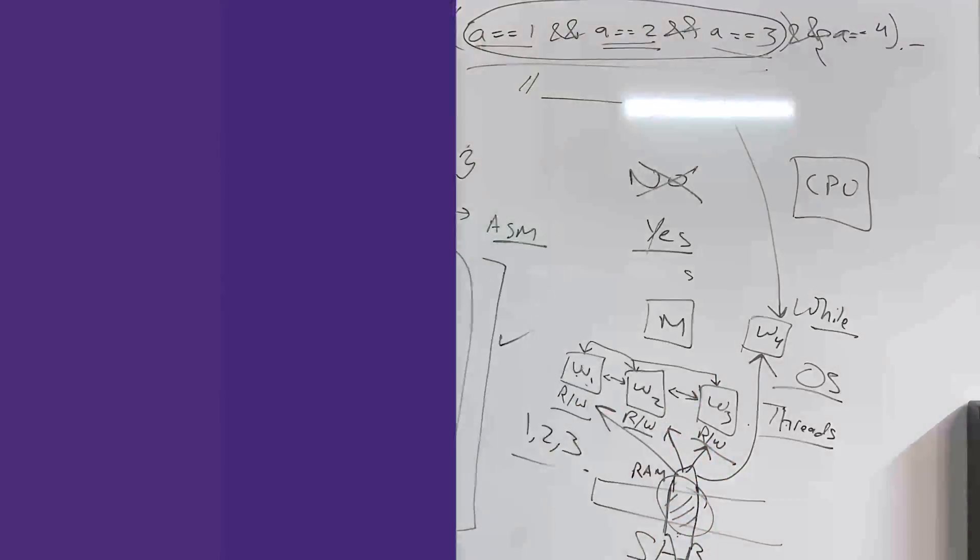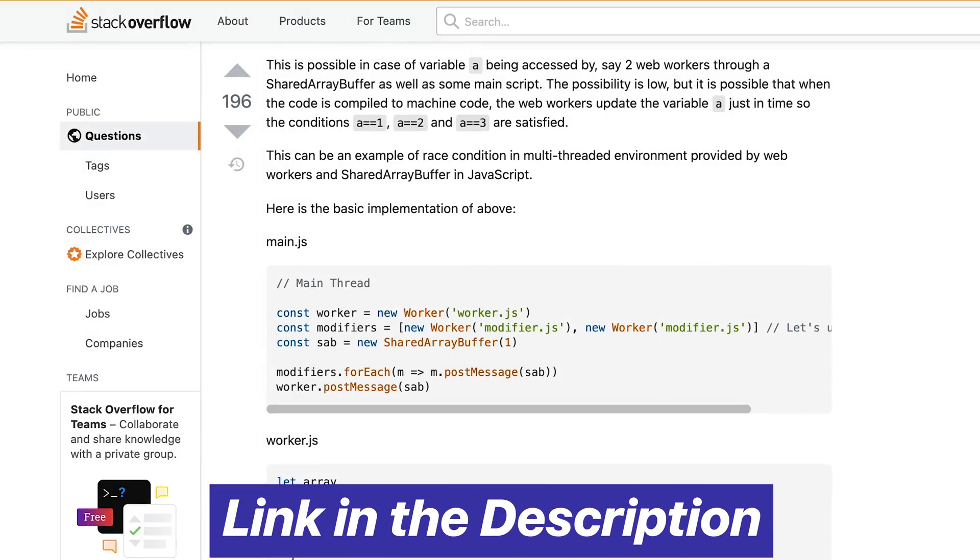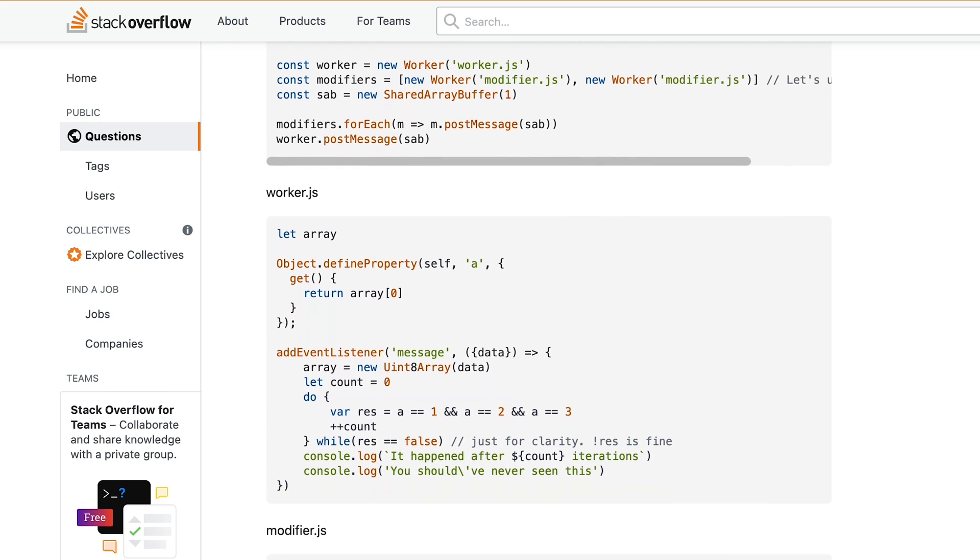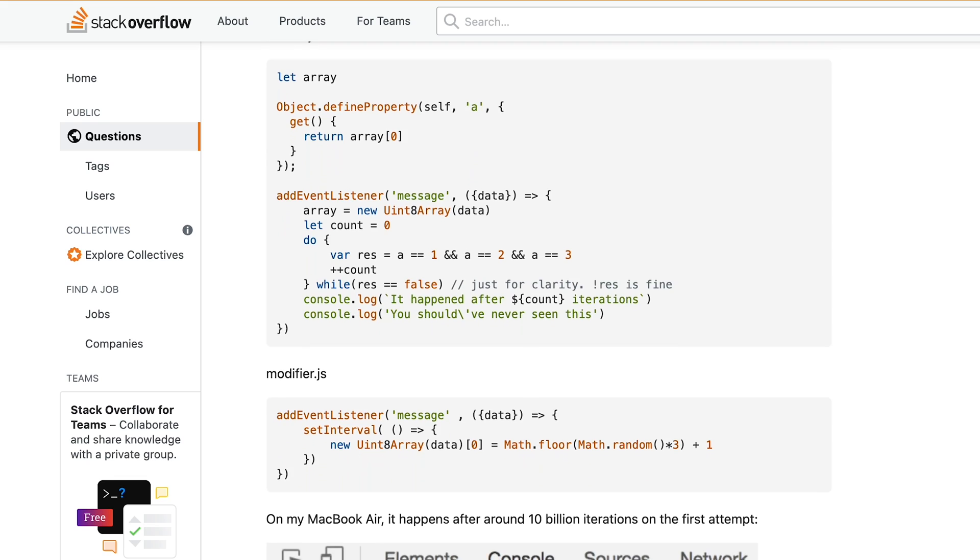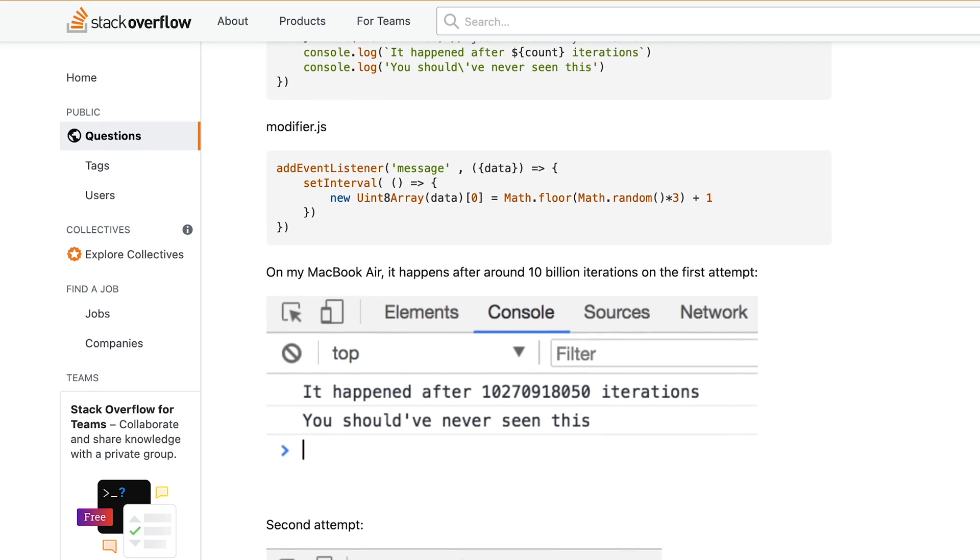If you want to check the proof of concept for this behavior, you can see on the screen, the code from my Stack Overflow answer. I'll also include a link in the description. But what this does is that it creates, just like we discussed, three workers, three separate threads executed and waits for that condition to hit.